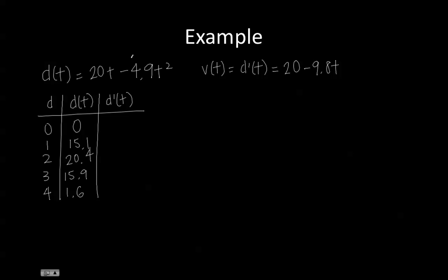you multiply the constant, negative 4.9t, multiply it by the exponent, which you get negative 9.8t. And using power rule, you subtract 1 from the exponent, and you get t to the power of 1.